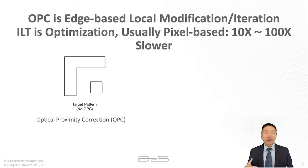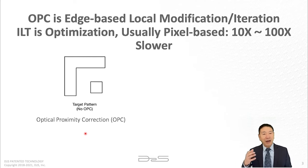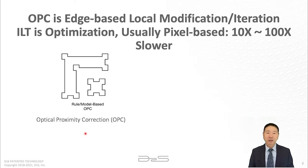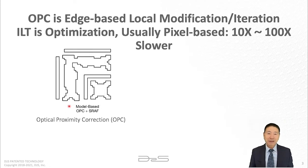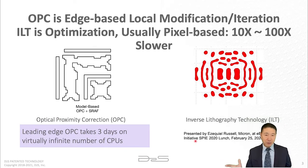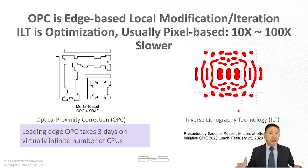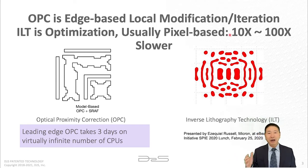When we talk about ILT, we need to mention OPC, because OPC is the first attempt to make the wafer print by computing the mask patterns. It is edge-based, started from a rule-based approach by adding the serif to the contact, and later model-based. But ILT is different. ILT in general is pixel-based, and it's an iterative optimization, so the runtime takes much longer — at least an order of magnitude longer than OPC, sometimes two orders of magnitude.